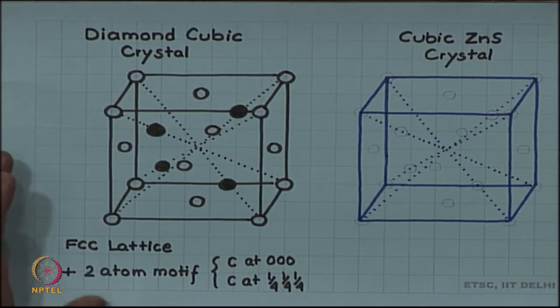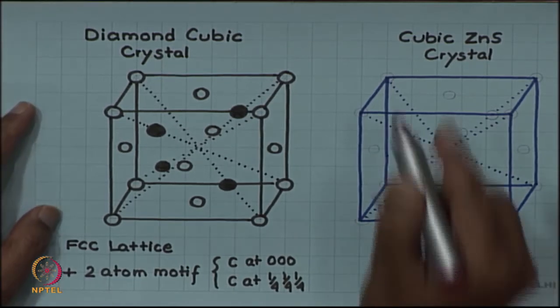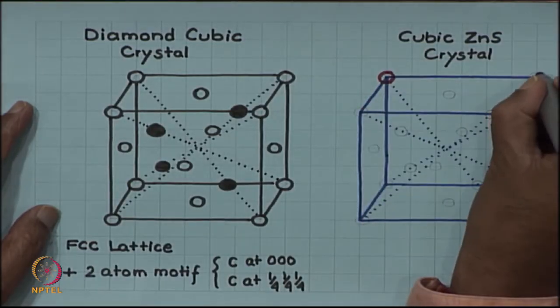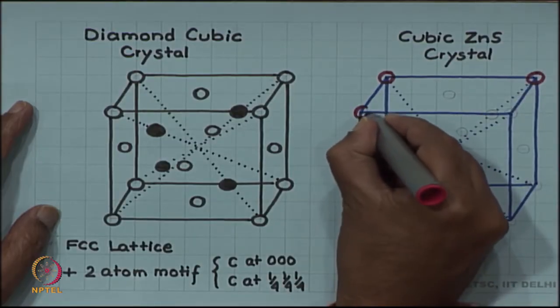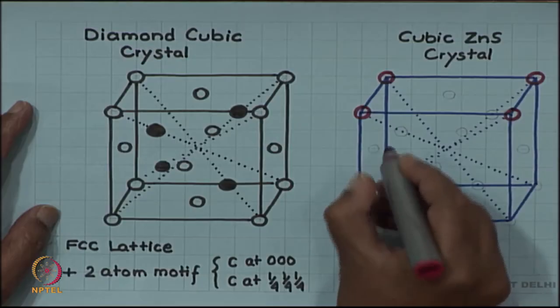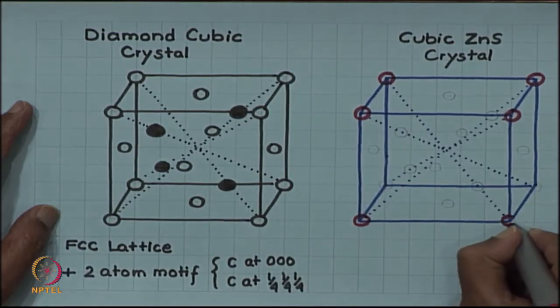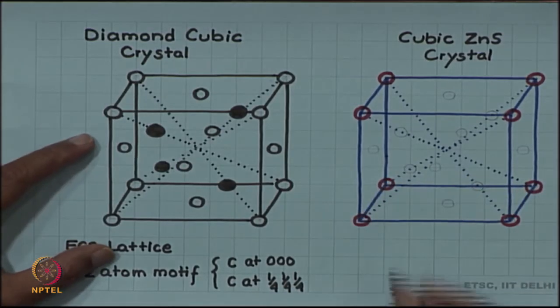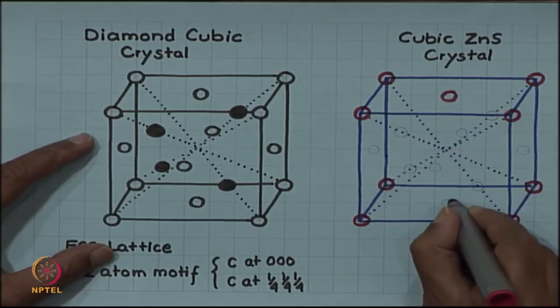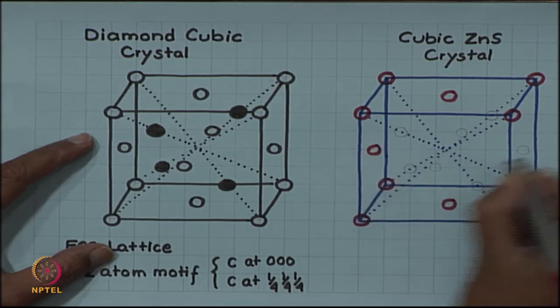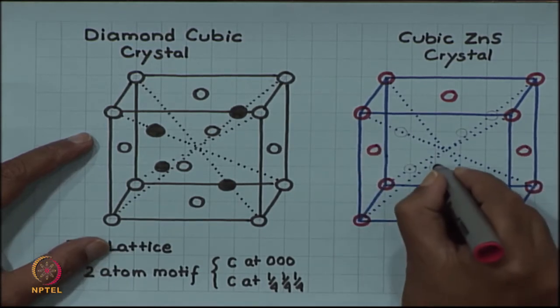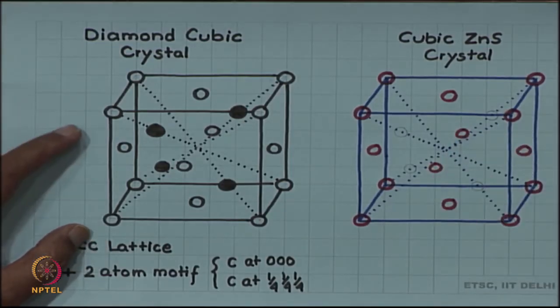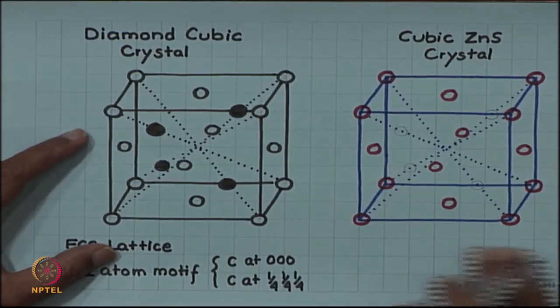The cubic zinc sulfide structure can be related to this. The sulfide ions can now be made to sit on the face centered cubic sites. I am placing the red sulfide ions first on the corners of the cube and then on the face centers: the top and bottom face centers, the left and right face centers, and front and back face centers.